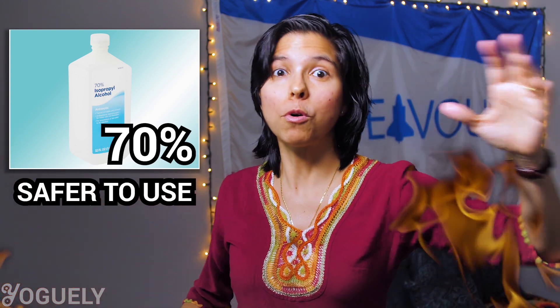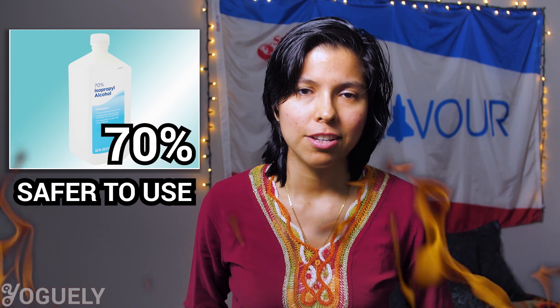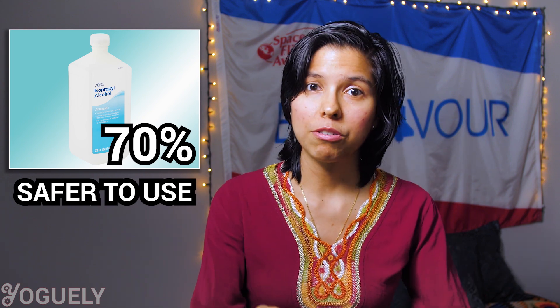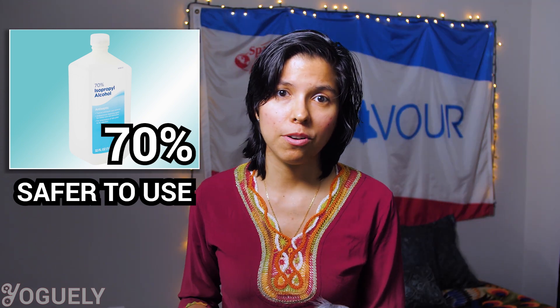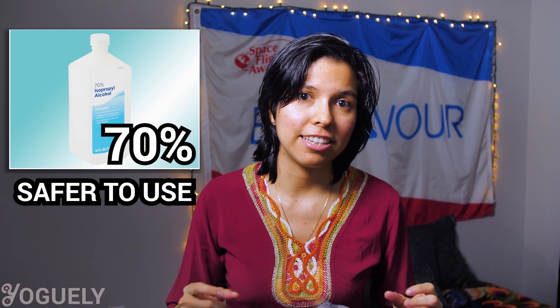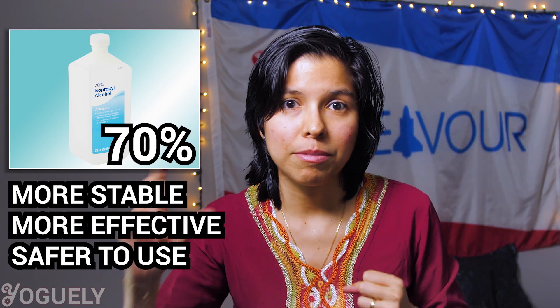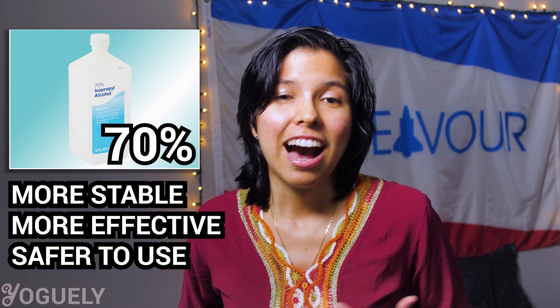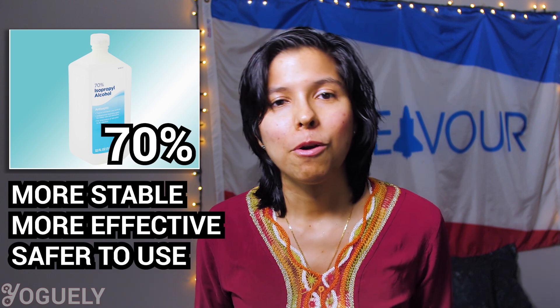Lastly, it is safer to use and store. Isopropyl alcohol is highly flammable, and the higher the concentration of alcohol, the more dangerous it is as a flammable solution. You don't want to be keeping high concentrations just lying around. For your safety at home, use the least concentration of isopropyl alcohol that is still effective against the microbe you want to eradicate. 70% isopropyl alcohol is the most diluted solution that still lies within the optimal concentration range recommended by the CDC. For these three reasons — stability, effectiveness, and safety — I go with 70% isopropyl alcohol whenever disinfecting at home.